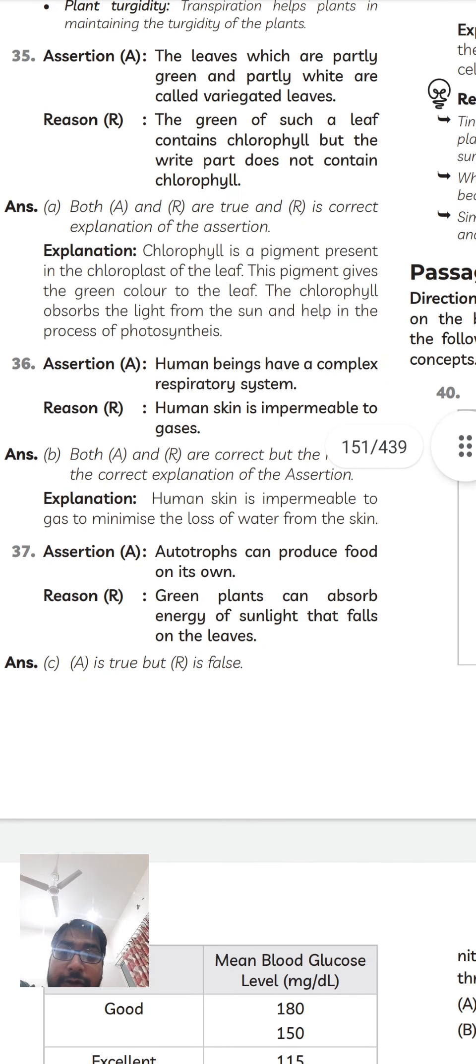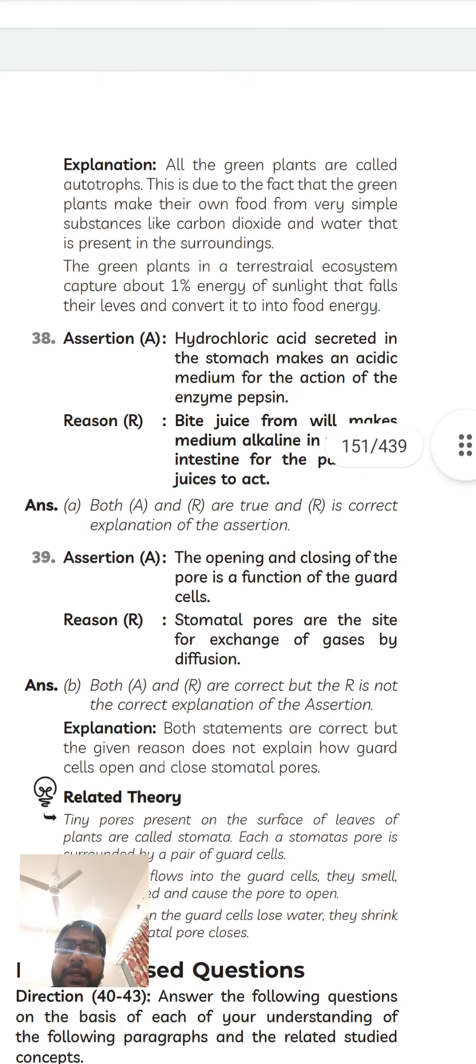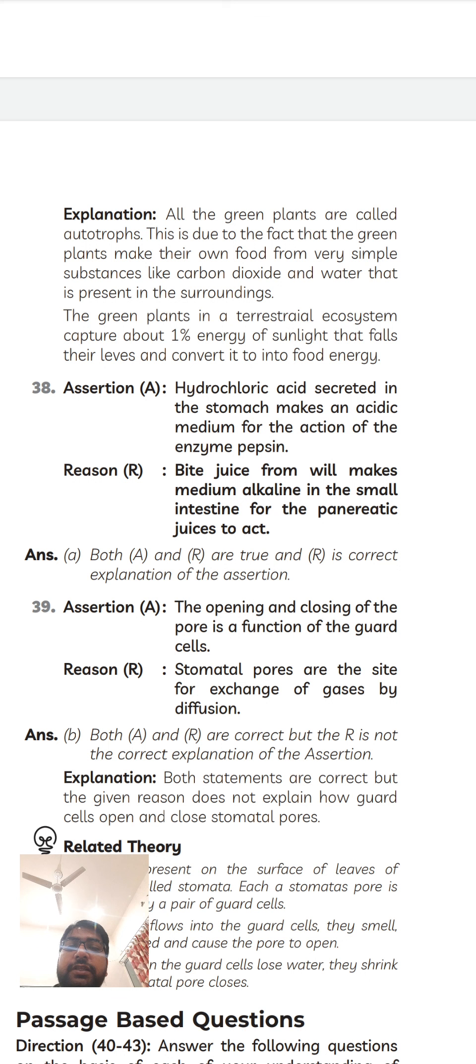Autotrophs can produce food on its own, definitely correct. Green plants can absorb energy of sunlight that falls on the leaves. Green plants in the terrestrial ecosystem capture about 1% of energy from sunlight that falls on the leaf and convert into food energy. This is correct, but the reason is not the correct explanation of assertion.